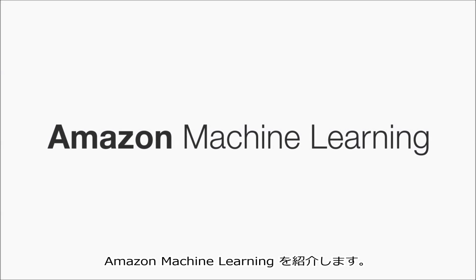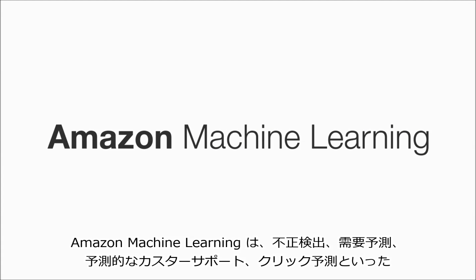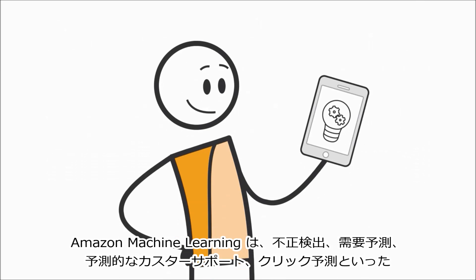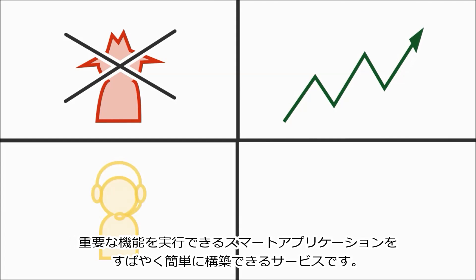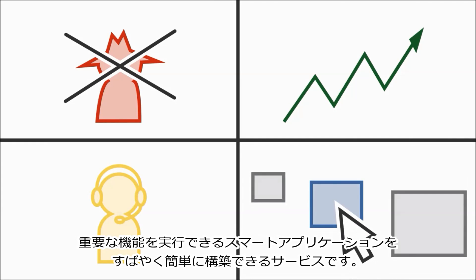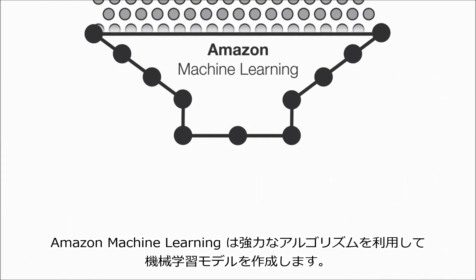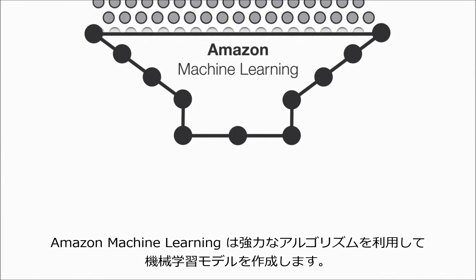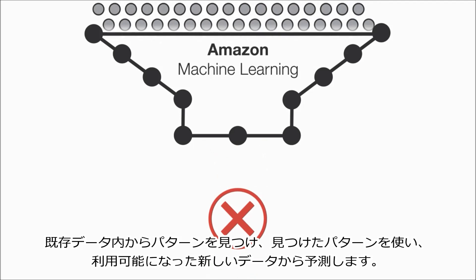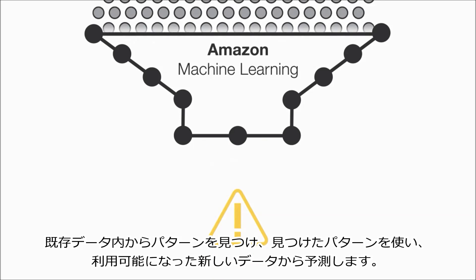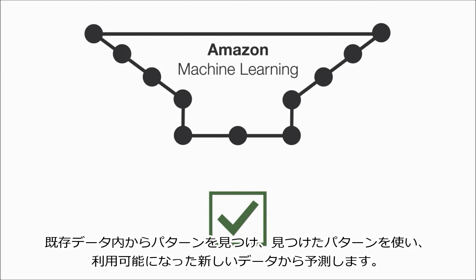What if there was a better way? Introducing Amazon Machine Learning — a service that allows you to quickly and easily build smart applications that can perform important functions like fraud detection, demand forecasting, predictive customer support, and click prediction. Amazon Machine Learning uses powerful algorithms to create machine learning models by finding patterns in your existing data and using these patterns to make predictions from new data as it becomes available.